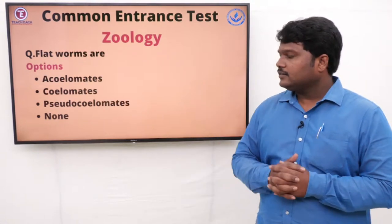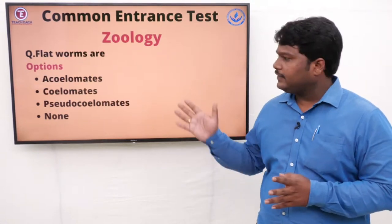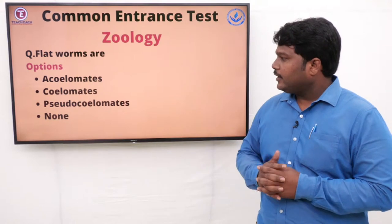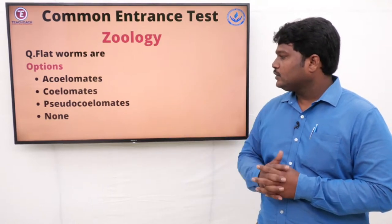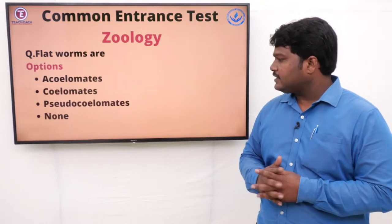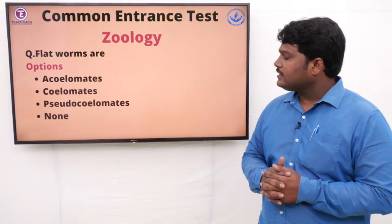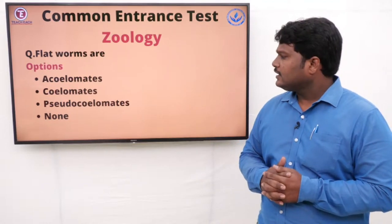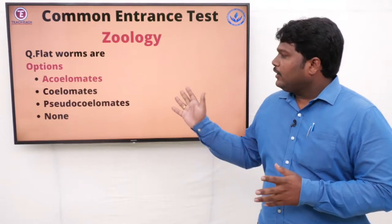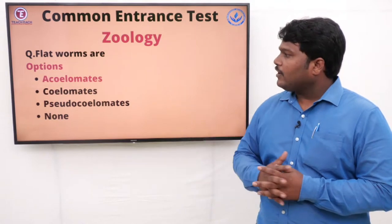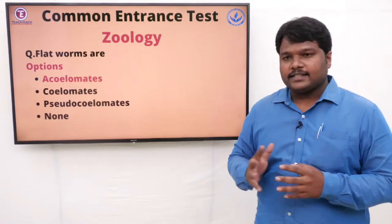Question 34: Platyhelminthes are. Options: A) Acoelomates, B) Coelomates, C) Pseudocoelomates, D) None. The right answer is acoelomates. Platyhelminthes are acoelomates.